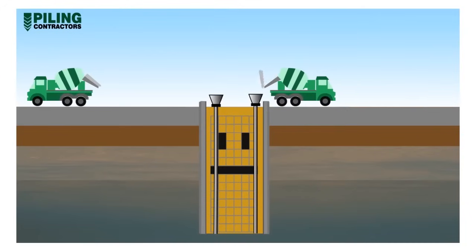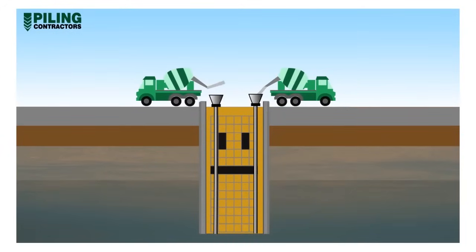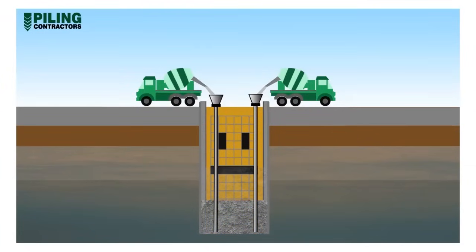Typically, two hoppers are used for a 6 metre wide panel. The hoppers and tubes are charged with concrete. Then, the tubes are lifted off the bottom of the excavation so that the concrete flows out, displacing the lighter bentonite mud upwards. The bentonite is pumped back to the recycling plant as it's displaced.